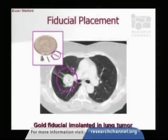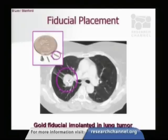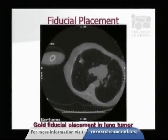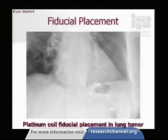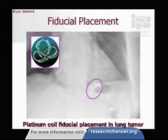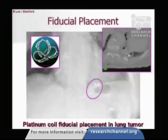This is an example of fiducial markers — very, very tiny, shown here in relationship to a penny. This scatter is from the fiducial placed in a lung tumor. Fiducials are made of gold. A needle is placed through the chest wall by our interventional radiologist and positioned directly into the tumor. There's also a platinum fiducial made more like a coil, which can similarly serve as a surrogate marker visible on imaging.